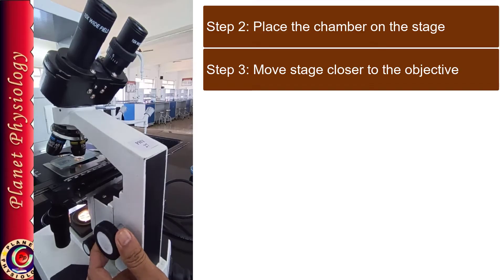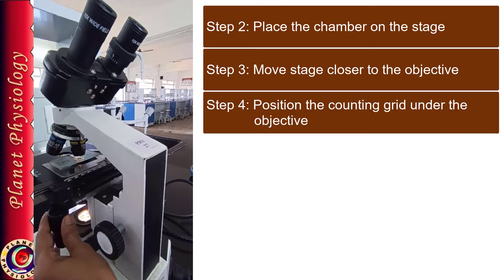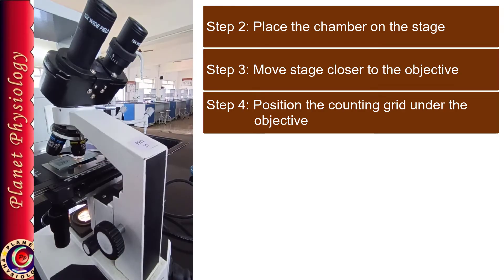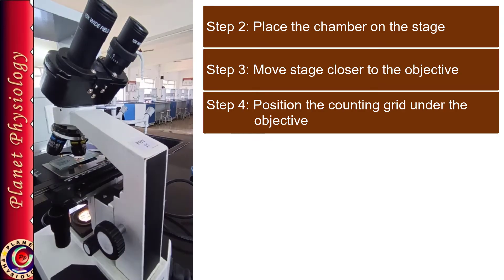Once it is close enough, move the stage in such a way that the central counting grid, what appears like plus sign, that comes approximately under the objective. So all these things you are doing while observing the chamber from this side, you are not using eyepiece till now.